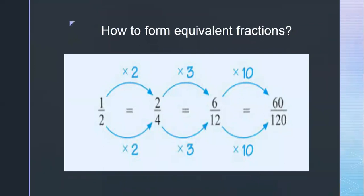In your exercise, you may need to form equivalent fractions. To form equivalent fractions, we multiply the fraction by the same number. Take one upon two — multiply it by two upon two and you get two upon four. Multiply by three upon three and you get another equivalent fraction. You can use any number — two, three, four, five, six, seven — but the number used in the numerator must be the same as in the denominator. This is how you form equivalent fractions.